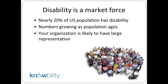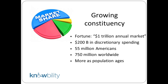Jessica's going to talk about the argument for why you should think about disability and accessible outreach in electronic communications because of the size of the market. Nearly 20% of the U.S. population has a disability, so regardless of what type of organization you are, you are eliminating an entire market if you're not making your website accessible. It's a $1 trillion annual market, $2 billion in discretionary spending, 55 million Americans, and $750 million worldwide — and that population increases as it ages.